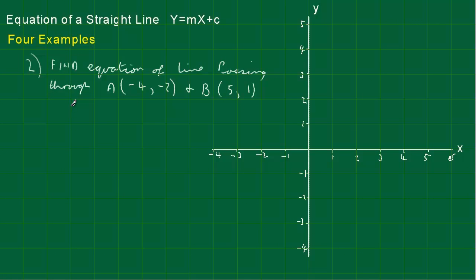Now the second problem: find the equation of a line passing through A, which is (minus 4, minus 2), and B, which is (5, 1). I'm going to label these x1, y1 and x2, y2 because I'm going to work it out algebraically, and then we'll plot it and see that it conforms to the equation we found.